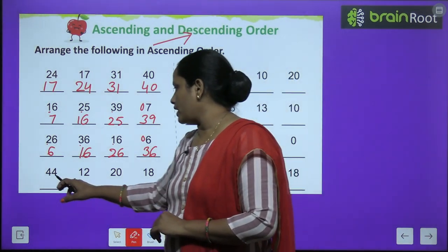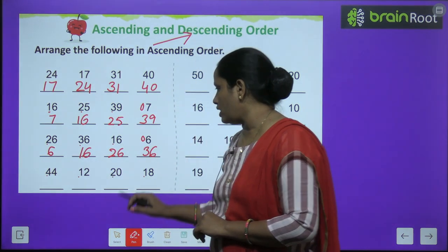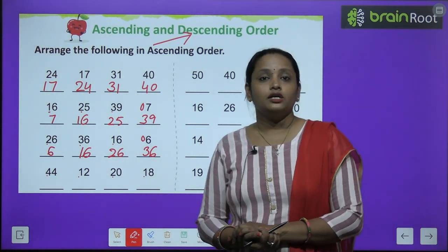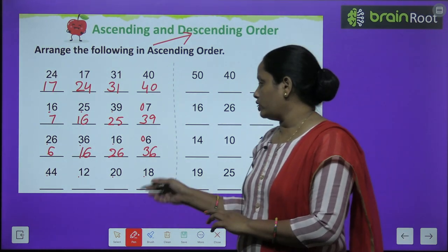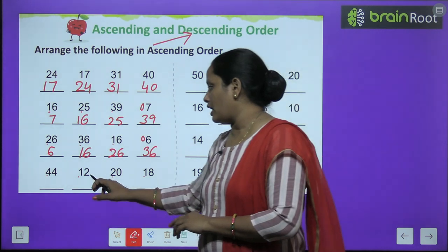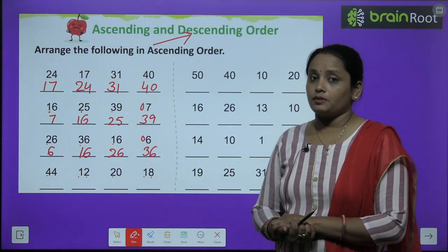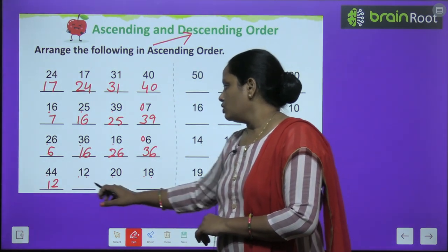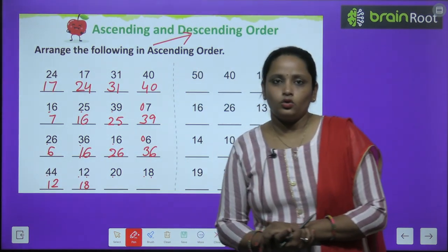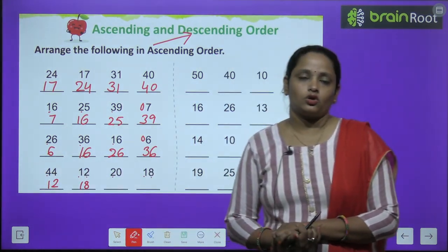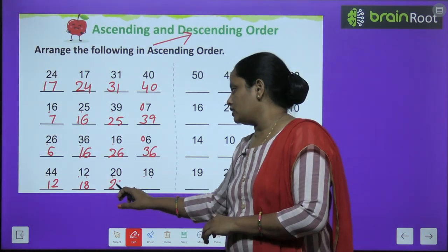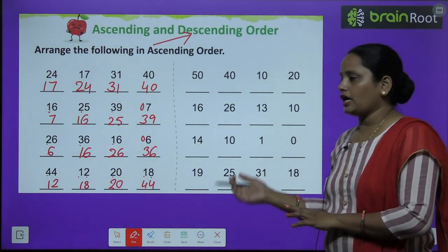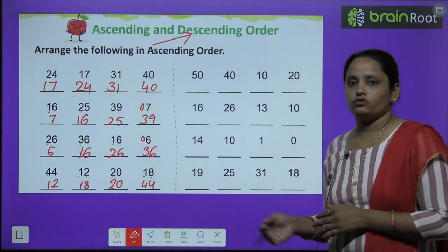Now next one. Ab dubara se dekhta hai: four, one, two, one. Oh ya haan toh do baar one aa raha hai. And one toh chhota hai. Ab jahe kise padega chalega ki kaunsa wala one chhota hai. Toh ab kyunki donon mein one aap ko dikh rahe hain, toh ab agle number ko dekhenge. Hai two aur yahan pe hai eight. Ab jaldi se bataiye, two chhota hai ya eight? Yes, two chhota hai. Toh hum likhenge twelve. One, eight: eighteen. Ab ye donon toh likh diya. Ab jaldi se bataenge two aur four. Donon mein se kaunsa chhota hai? Toh two chhota hai toh haan likh diya: twenty. Aur four ban gaya: forty-four. So numbers kya hain? Twelve, eighteen, twenty, forty-four.